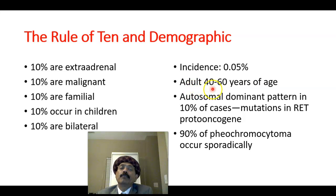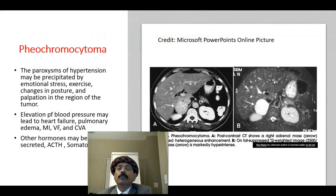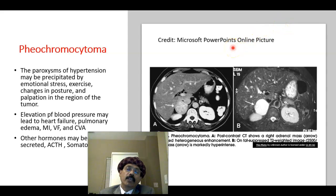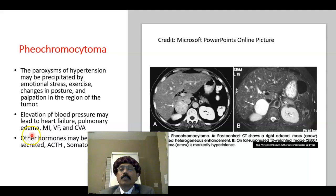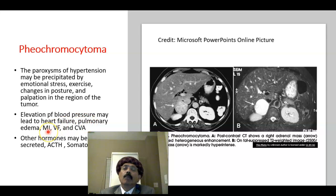The incidence is 0.05%, so it is a rare disease. Adults aged 40 to 60 are the most commonly affected. Paroxysms of hypertension are precipitated by emotional stress, exercise, changes in posture, and palpation in the region of the tumor.